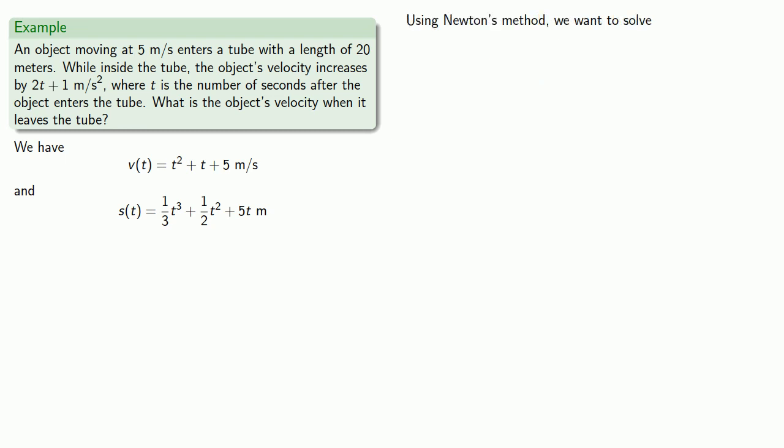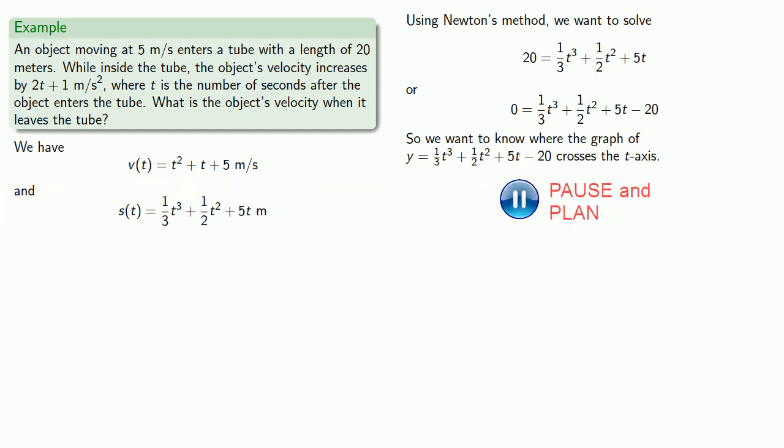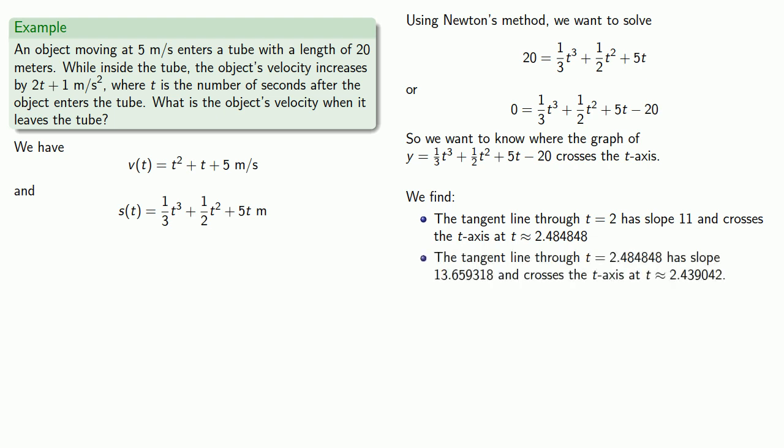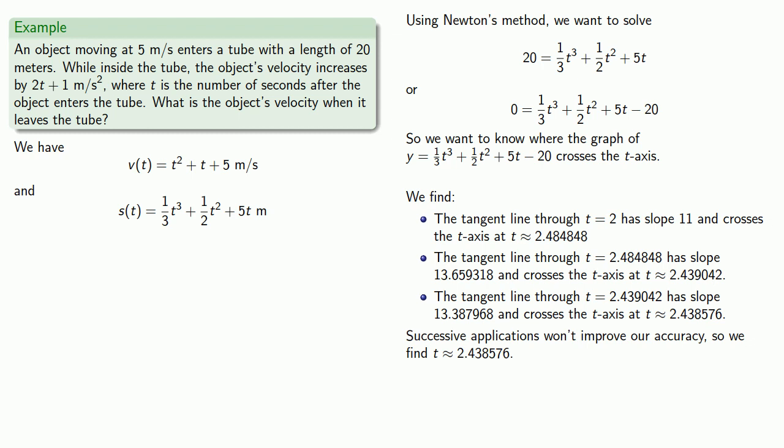Let's see what happens when we use Newton's method. So we're trying to solve our equation, so we need to make that an expression equal to zero. We can phrase this as a problem of where the graph of a function crosses the axis. Newton's method uses a series of successive approximations. We find the tangent line through t equals 2 has slope 11 and crosses the t axis at t about 2.48. If we go to that point, the tangent line through that point has slope 13 and crosses the t axis at a certain location. And if we go to that point, we find a crossing of the t axis at 2 point mumble. If we try to go any further, we don't get any further improvements on our accuracy. So the best we can find is that t is around 2.4.